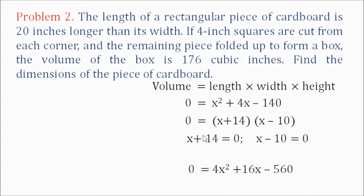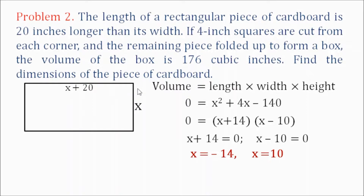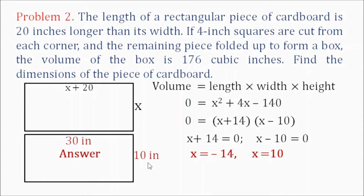Equating both factors to 0, we have x plus 14 equals 0 and x minus 10 equals 0. For the first equation, subtracting 14 from both sides gives x equals negative 14. For the second equation, adding 10 to both sides gives x equals 10. Since we don't have negative length, x equals 10. So from our original cardboard, the width is x equals 10, and the length is x plus 20, which is 10 plus 20 equals 30.